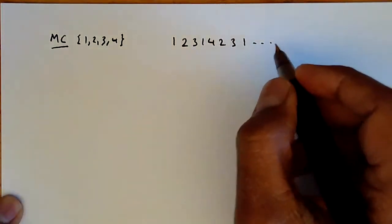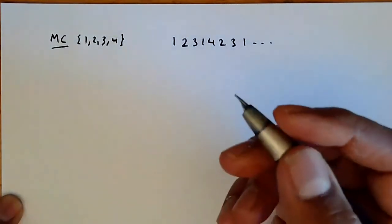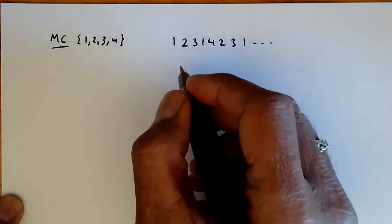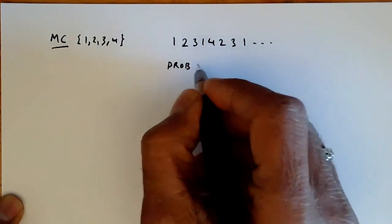And since it's a Markov chain, this trajectory is infinite. And so we can compute certain statistics of interest. For example, what's the probability of being in state one?